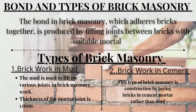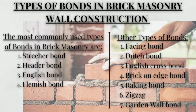The bond in brick masonry which holds bricks together is produced by filling the joints between bricks with suitable mortar. Here are some types of brick masonry work: first, brick work in mud, and second, brick work in cement. The most commonly used types of bonds are: stretcher bond, header bond, English bond, and Flemish bond.